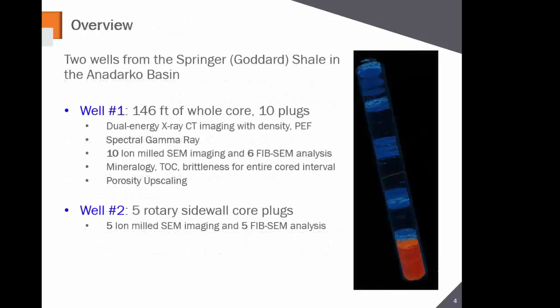We have two wells. On well one, we have 146 feet of core. For the digital side, we took about 10 plugs, and for the physical side, about 31 plugs. Well two had just five rotary sidewall cores. On well two, we ran full digital analysis but none on the physical side. It's always ideal to get both sides — physical and digital — and overlap them. In this case we couldn't get a direct overlap, but there's still tons of value in seeing how the two techniques compare.